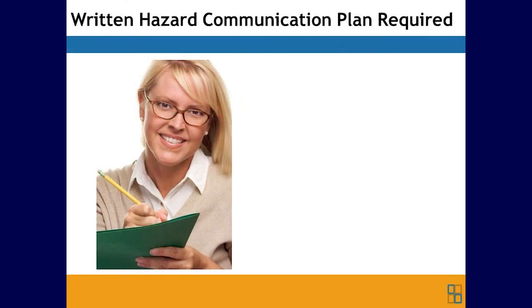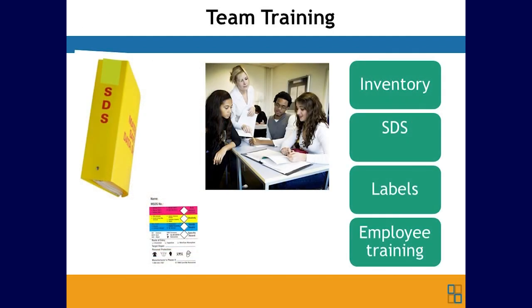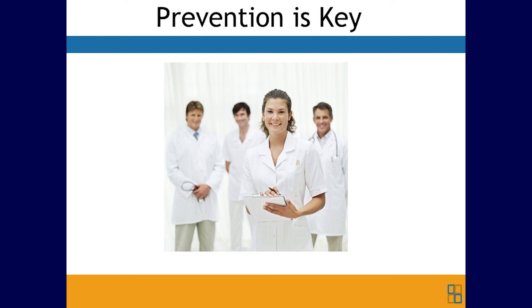Your written hazard communication plan is required — make certain it is reviewed with your team, is up to date, and is personalized in your OSHA manual. Team training includes how to access and read safety data sheets, how to understand label requirements, and how to use personal protective equipment when working with hazardous chemicals. Training increases confidence, reduces errors, and ensures every team member knows exactly what to do and where to get information on chemicals they may be exposed to at work.